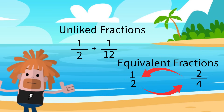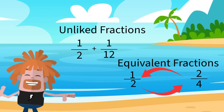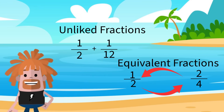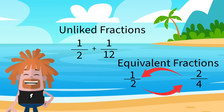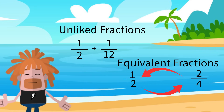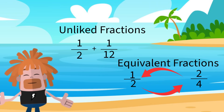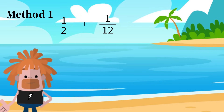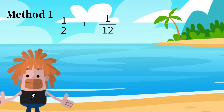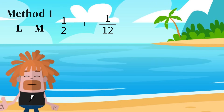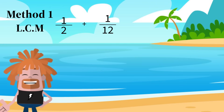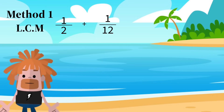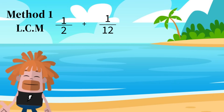There are different methods for adding and subtracting fractions with unlike denominators. In this video, we will talk about two methods, and you can decide the method that you prefer. Method 1 is finding the least common denominator, or LCM. To do this, we are going to list the multiples of each denominator and select the least common multiple.